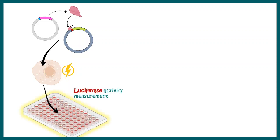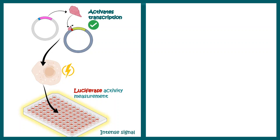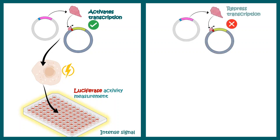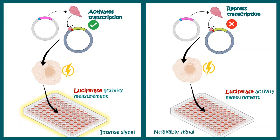We can also understand whether a particular protein of interest is repressing or activating transcription. We co-transfect cells with an expression vector containing the protein of interest along with a luciferase reporter construct. If we see high luciferase reporter activity, that means the protein is a transcriptional activator. In contrast, if after transfection we see negligible luciferase activity, that means the protein is a repressor of transcription. These kinds of questions can also be asked using a luciferase reporter assay.